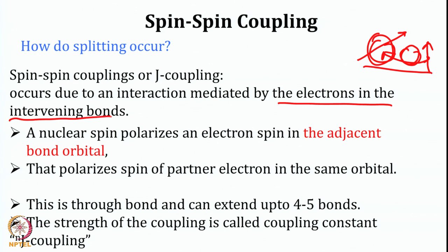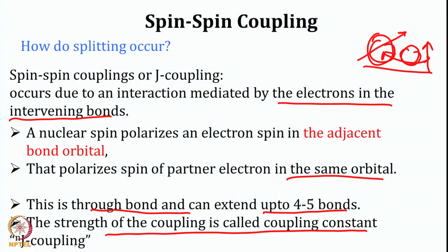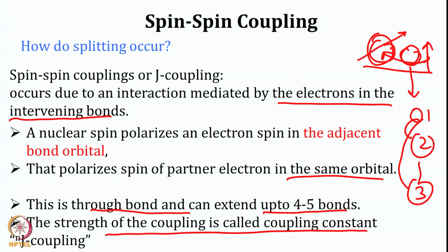A nuclear spin can polarize the electron spin adjacent to the bond orbital, and that polarizes the spin of the electron in the same orbital. This effect can extend up to 4 to 5 bonds, but as you go further and further, the strength of that effect decreases. Therefore the J coupling becomes smaller and smaller as we move farther away. The strength of the coupling is called the J coupling constant.